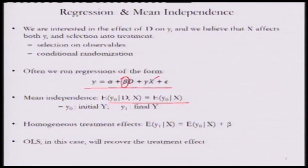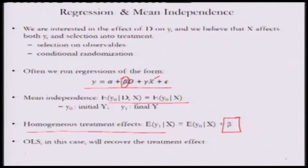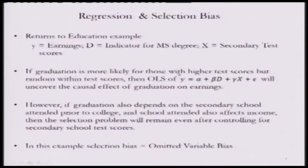The other point is homogeneous treatment effect: the expectation of y-one given x equals the expectation of y-naught given x plus beta, meaning the effect due to the intervention is the same for all individuals in the sample. If these conditions are met, OLS will recover the treatment effect. The problem comes when these conditions are not met.